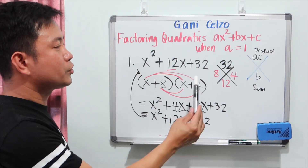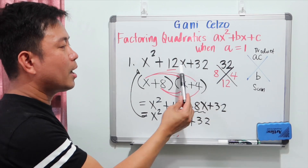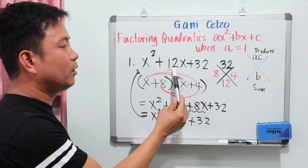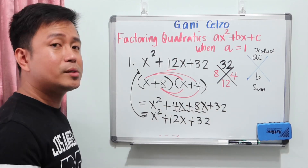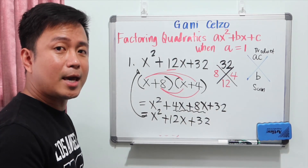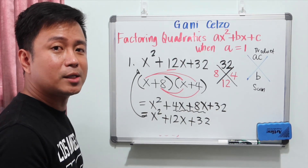Again, we needed a product of 32 and a sum of 12, so we used the two numbers 8 and positive 4.